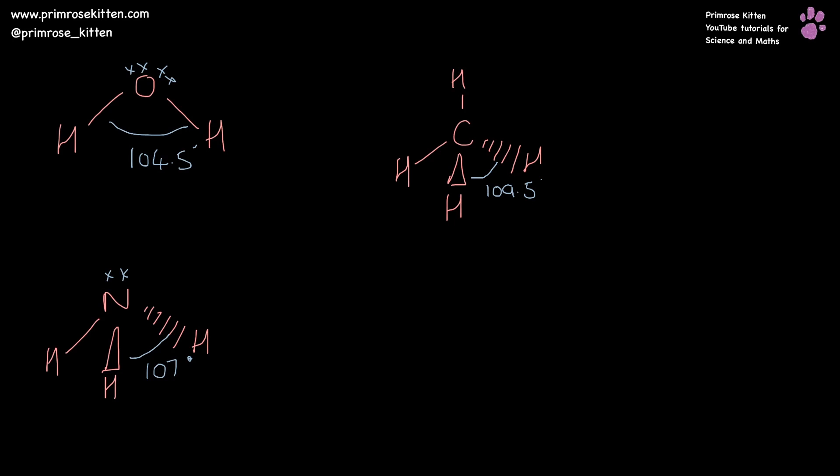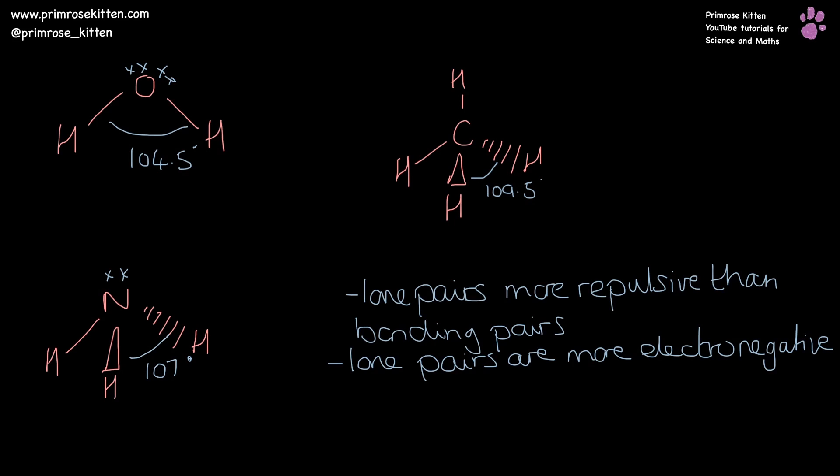Now this is because of the electron pair repulsion theory. Very briefly, lone pairs are more repulsive than bonding pairs. This is because lone pairs are more electronegative or electron dense than a bonding pair. Electrons want to be as far away from each other as possible. So if we have this massively electron dense area, it is going to be forcing these bonding pairs downwards.